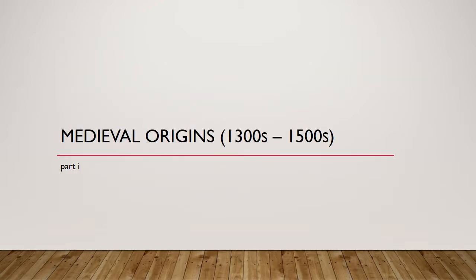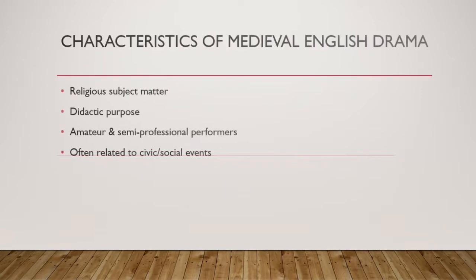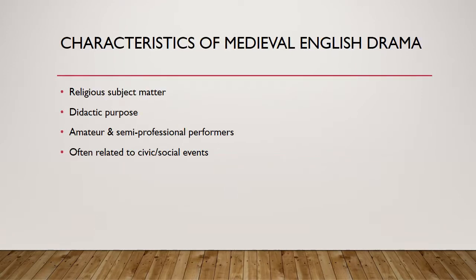Part one of this video lecture is on the medieval origins of Renaissance drama. So what are the major characteristics of medieval English drama? First, the subject matter was almost entirely religious — either directly scriptural or talking about religious and theological issues. And this leads us to its purpose: it was didactic in purpose. That means most plays were expressly intended as a kind of education in morals, ethics, and appropriate religious knowledge for the common audience.